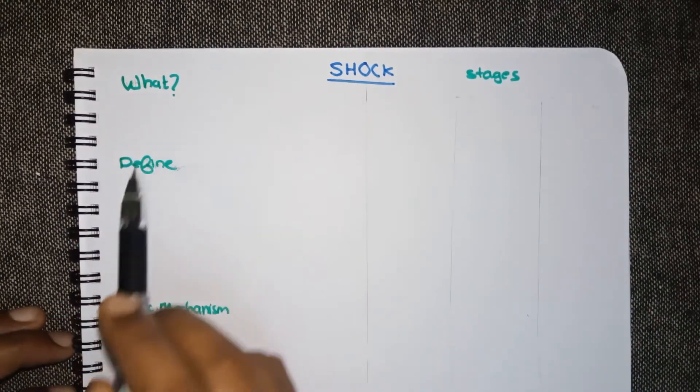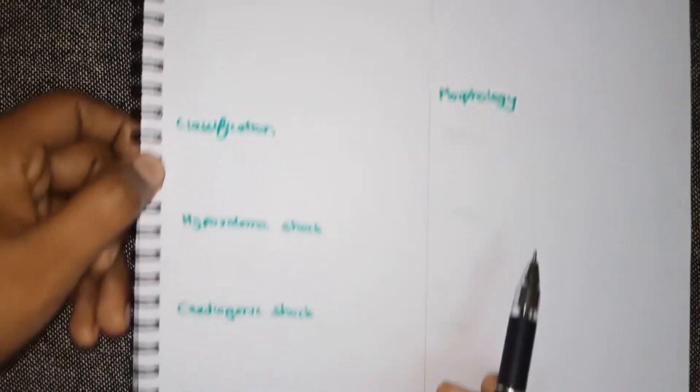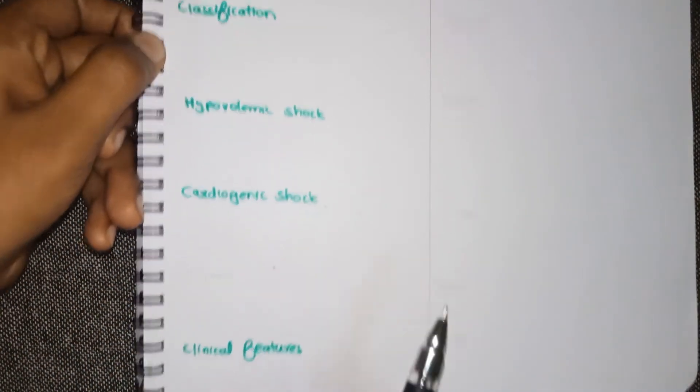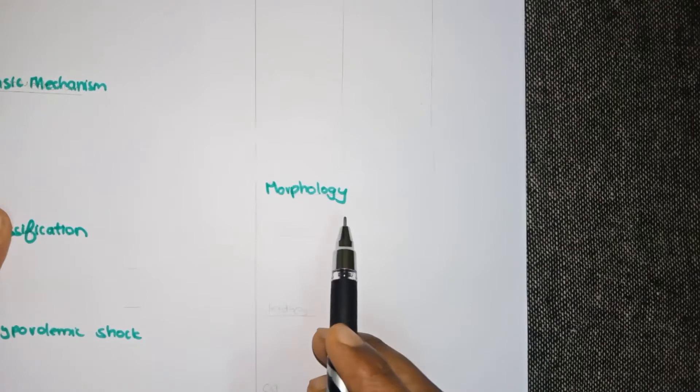We will be discussing it under the topics: what is it, definition, basic mechanism, its classification about hypovolemic and cardiogenic shock, the clinical features, stages, and finally its morphology.